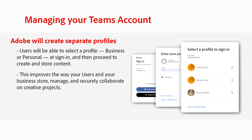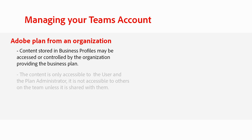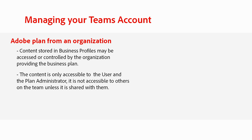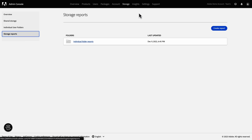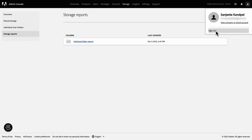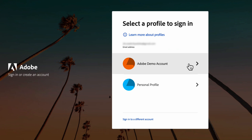This improves the way your users and your business store, manage, and securely collaborate on creative projects. If your users receive an Adobe plan from an organization such as a business, government entity, or educational institution, then the Adobe profile associated with that plan is a business profile. Content stored in business profiles may be accessed or controlled by the organization providing the business plan. The content is only accessible to the user and the plan administrator — it is not accessible to others on the team unless it is shared with them. If you or your users want to switch profiles, simply sign out and sign back in. After entering your credentials, the profile chooser is displayed and you can select the profile of your choice.